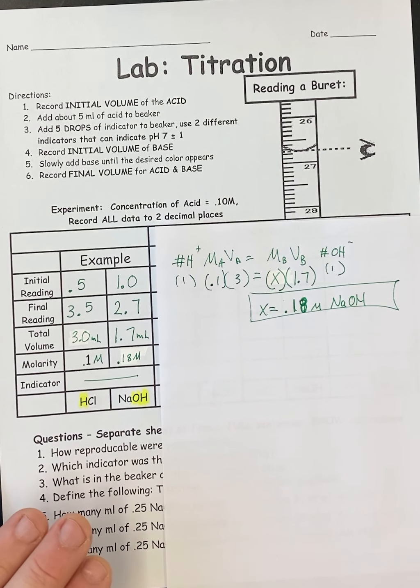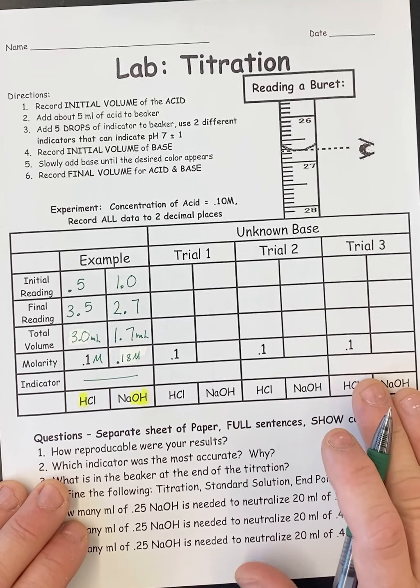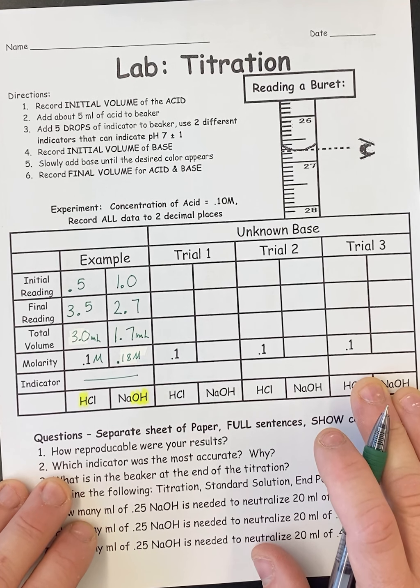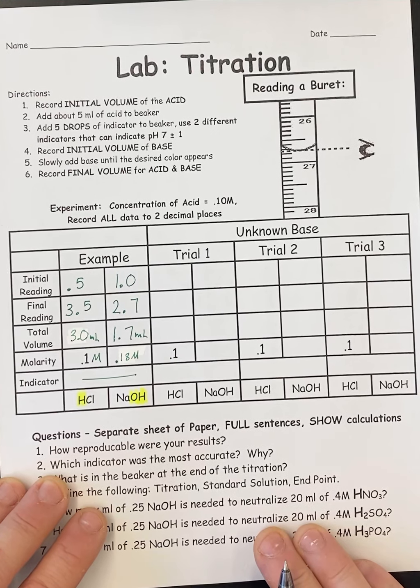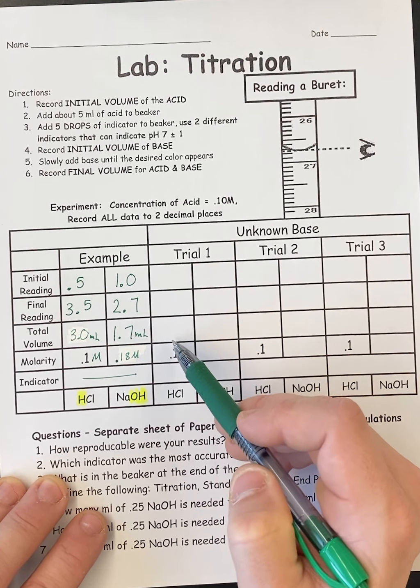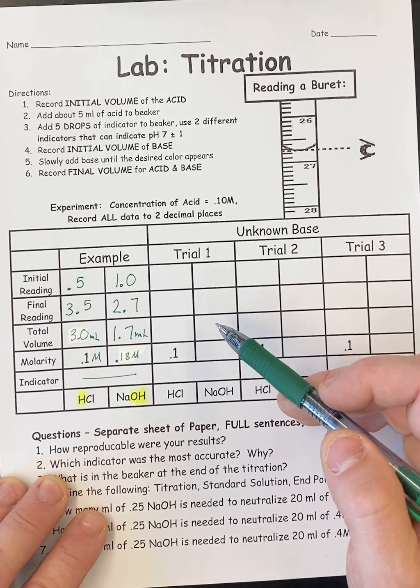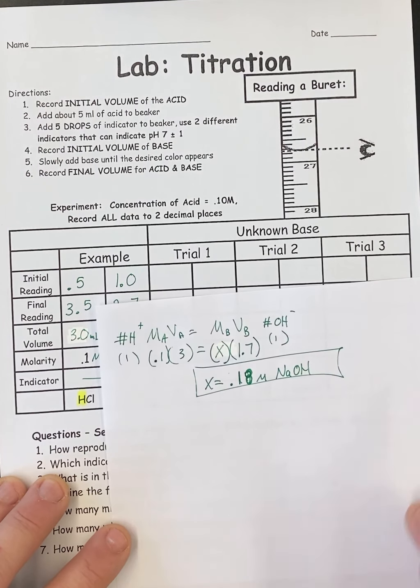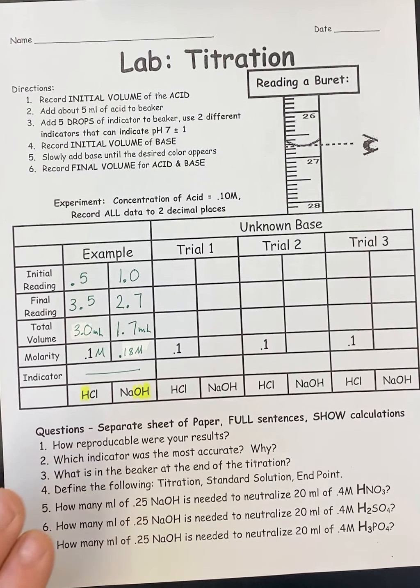We're using the same acid for all three trials. We're using the same base for all three trials. The acid concentration is all known. The base concentration is all unknown. So that's what we're going to be solving for every time. You're going to use the pictures in the lab to read the burettes before and after, and then subtract to get the amount that was used. And you're going to do that for the acid trials. You're going to do that for the base trials. And then you're going to calculate using the titration formula, the concentration of the base. It's that simple.